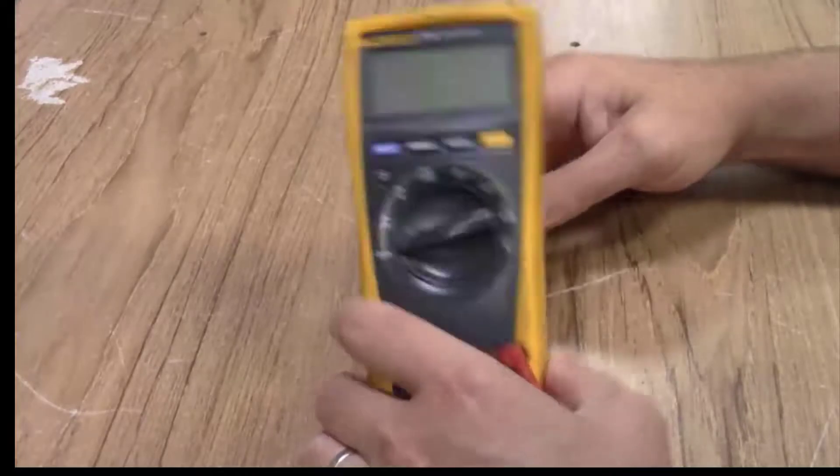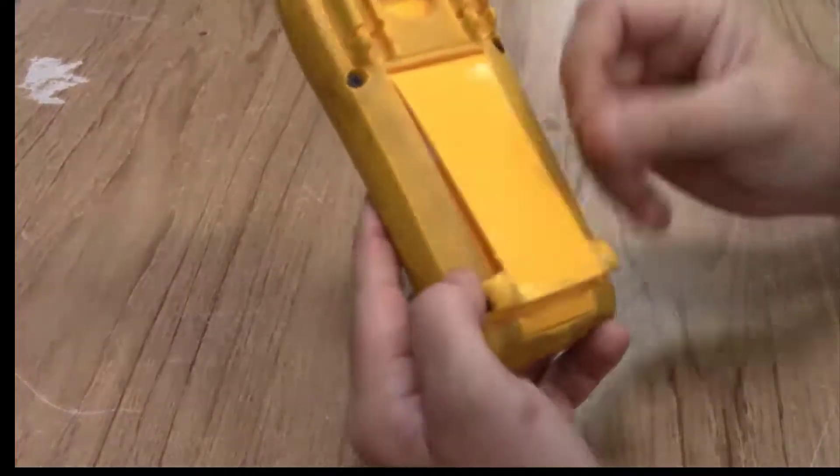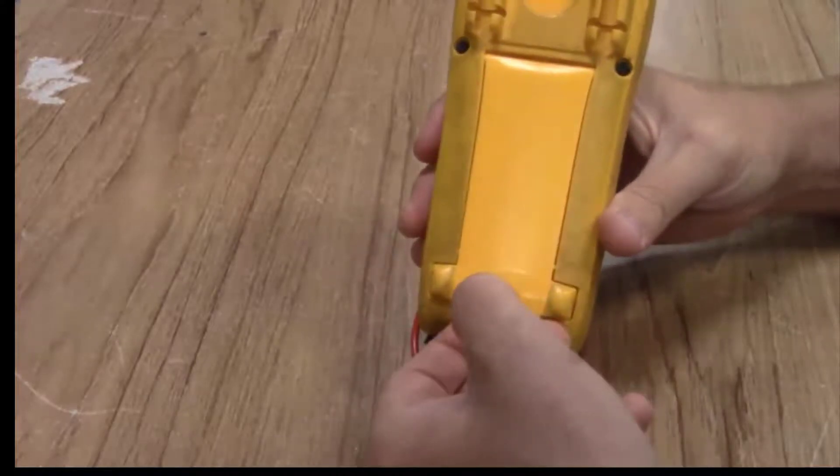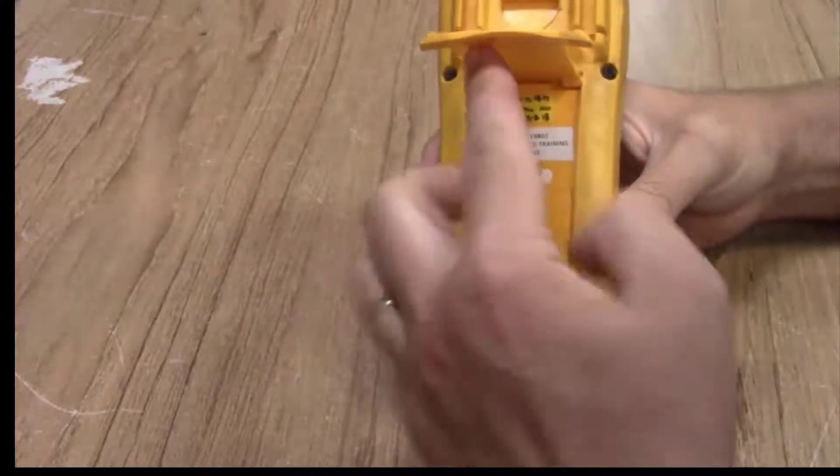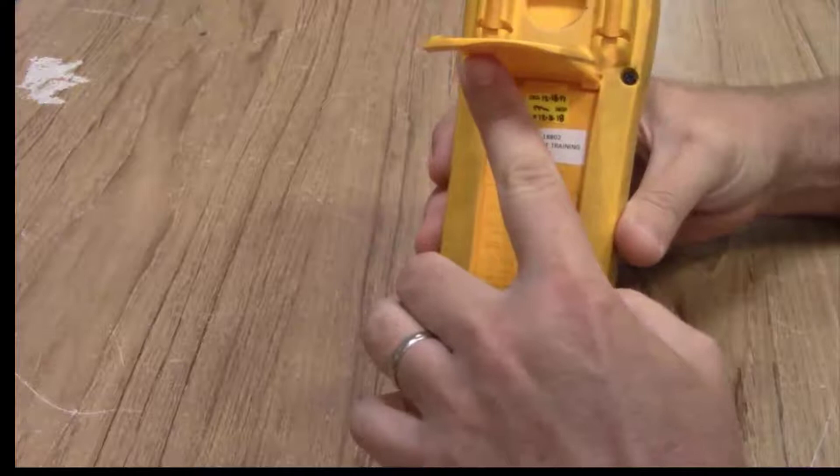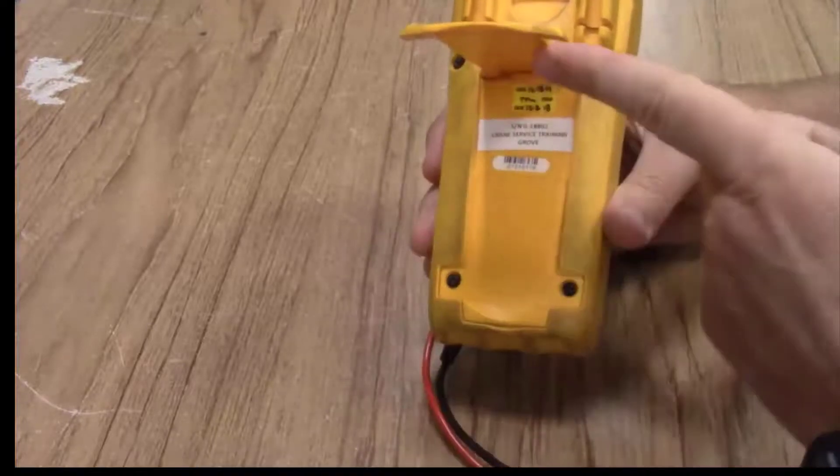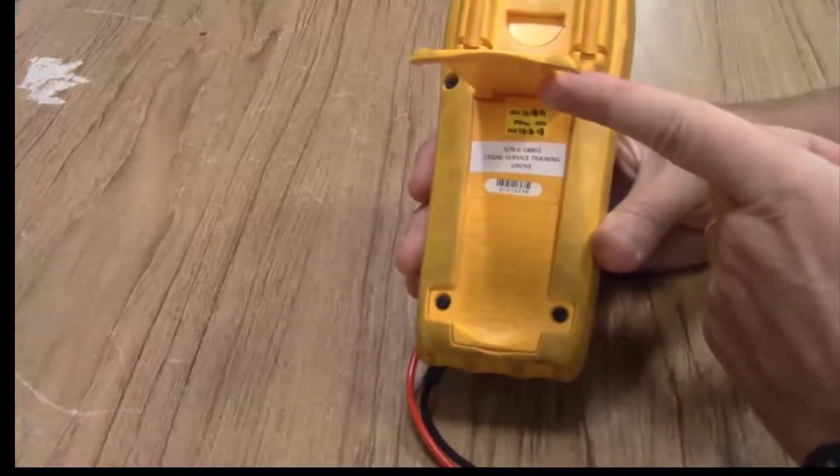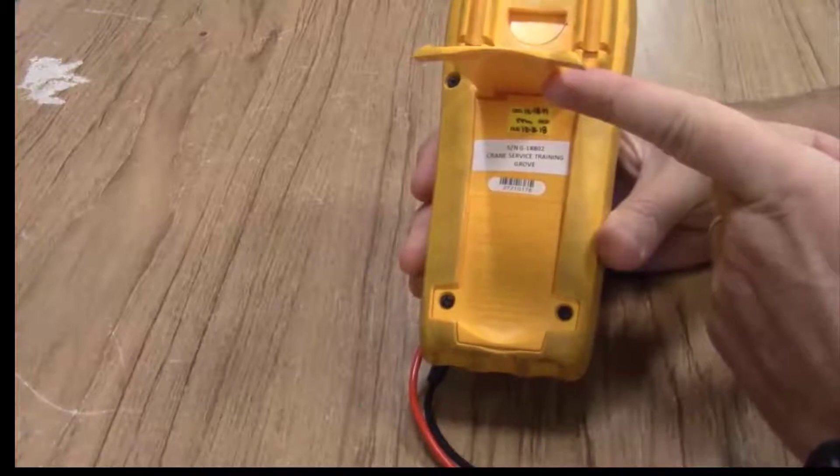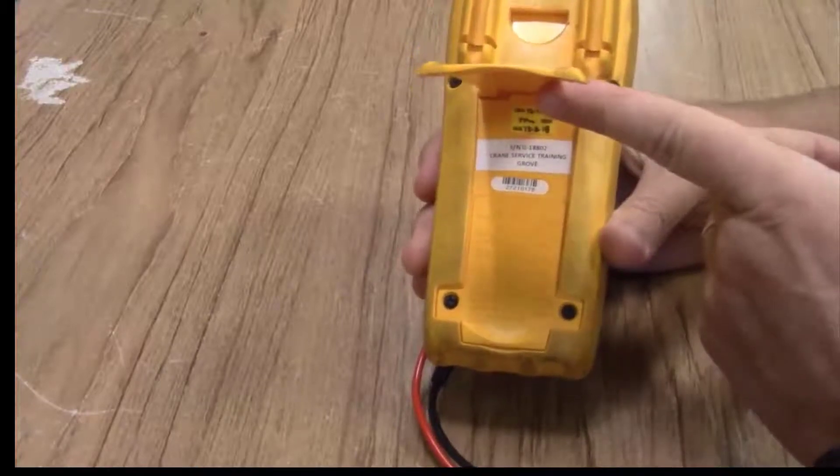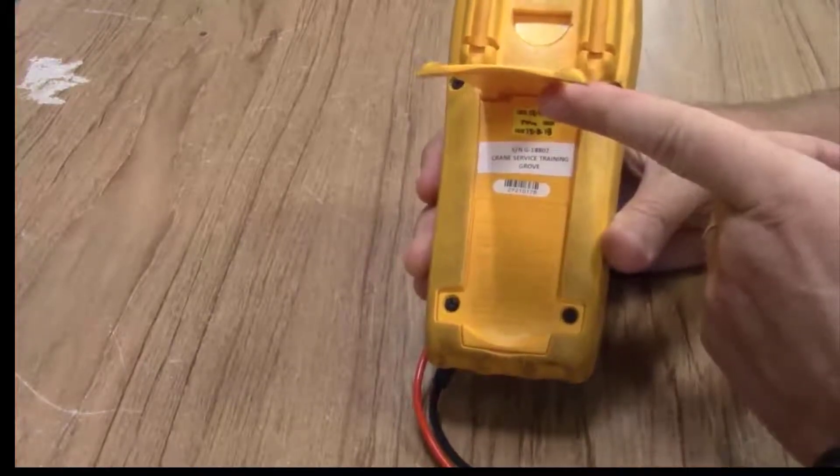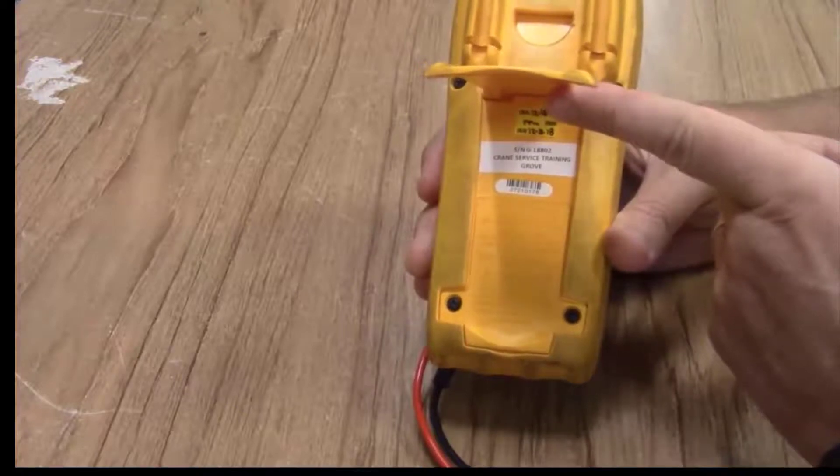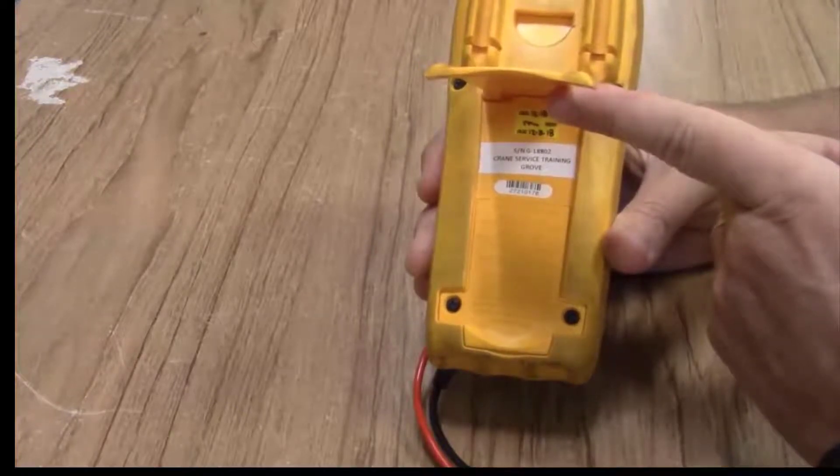So you can also flip the meter around on the rear. On this model, you have a prop and under the prop there is a spot to take out two screws so that you can replace the nine volt battery that's in them. There's also a couple of fuses that could blow for protection purposes that are also replaced in the same compartment on the back of the meter.